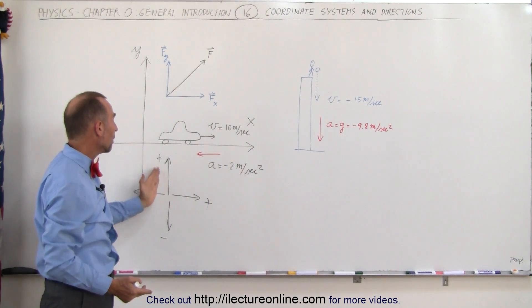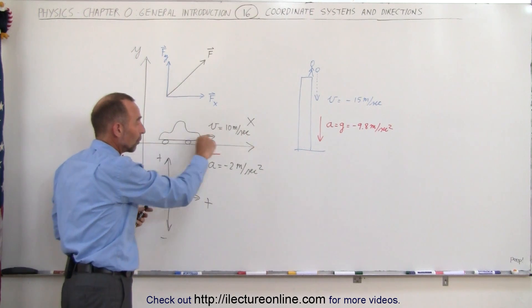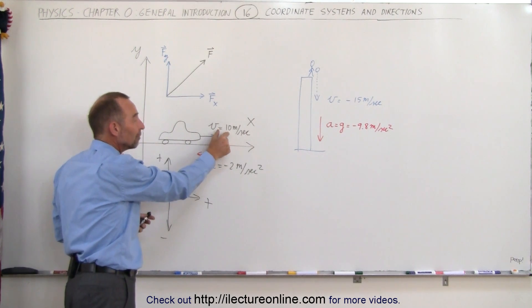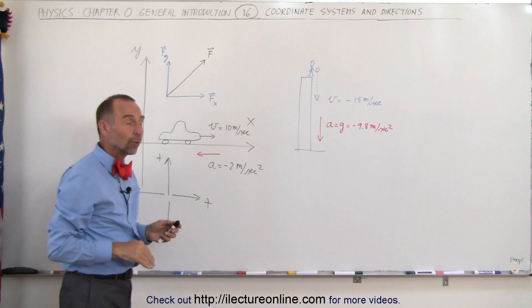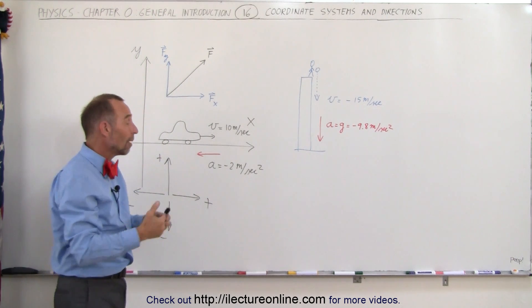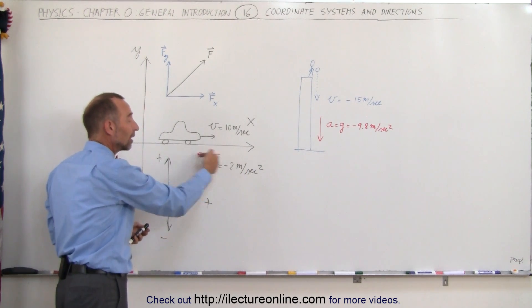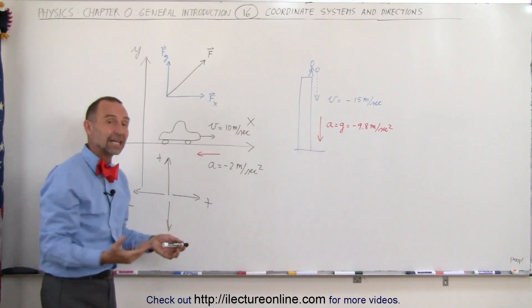When we have a car driving along, and let's say the car is driving to the right, the velocity will be positive because it's to the direction to the right. However, if the car is slowing down such that the acceleration is minus 2 meters per second squared, then the direction of acceleration will move to the left because that's the negative direction.